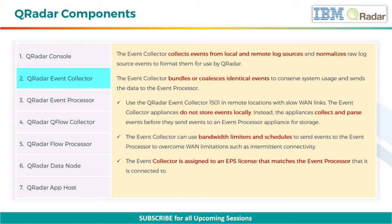The Event Collector appliances do not store events locally. Instead, the appliances collect and parse events before they send events to an event processor appliance for storage. The Event Collector can use bandwidth limiters and schedules to send events to the event processor, to overcome WAN limitations such as intermittent connectivity. The Event Collector is assigned to an EPS license that matches the event processor that it is connected to.